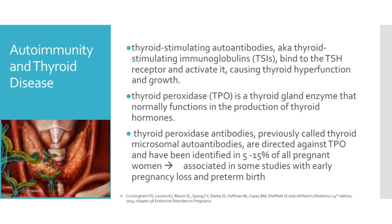Thyroid-stimulating autoantibodies, also known as thyroid-stimulating immunoglobulins, bind to the TSH receptor and activate it, causing thyroid hyperfunction and growth. Thyroid peroxidase is a thyroid gland enzyme that normally functions in the production of thyroid hormones. Thyroid peroxidase antibodies, previously called thyroid microsomal autoantibodies, are directed against TPO and have been identified in 5-15% of all pregnant women, and this is associated in some studies with early pregnancy loss and preterm birth.